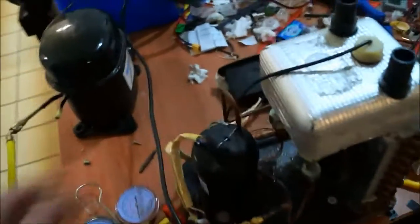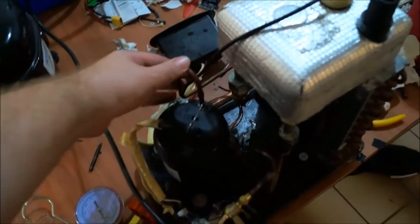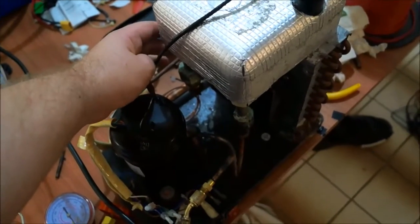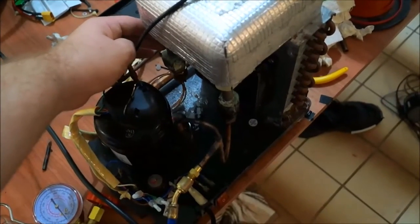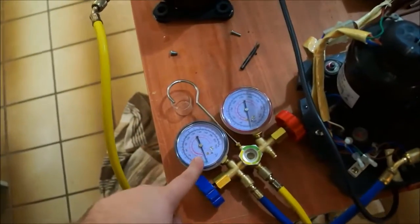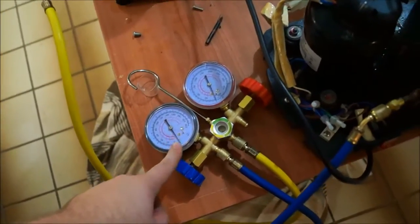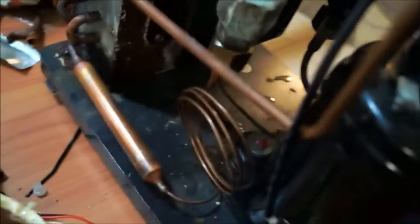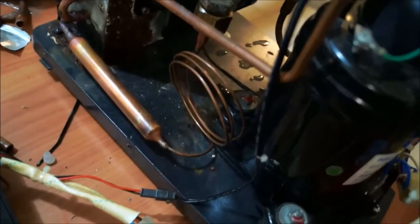First thing I noticed was the discharge line was getting crazy hot but I was getting basically very little cooling. I had the gauges connected as well and I noticed it was hardly getting above vacuum, so pretty quickly figured out that there was a blockage somewhere, probably in the capillary.